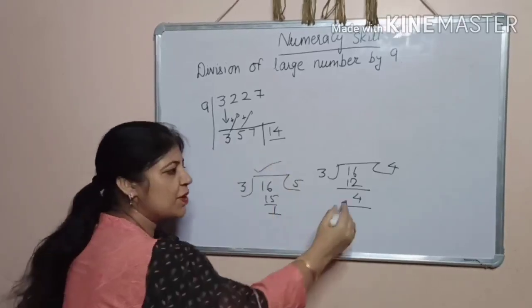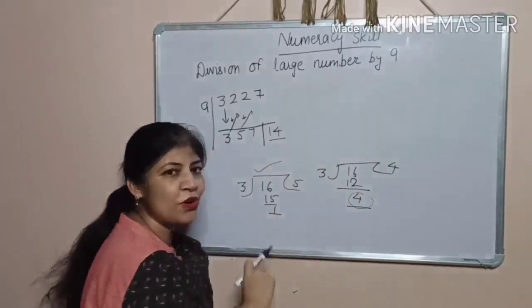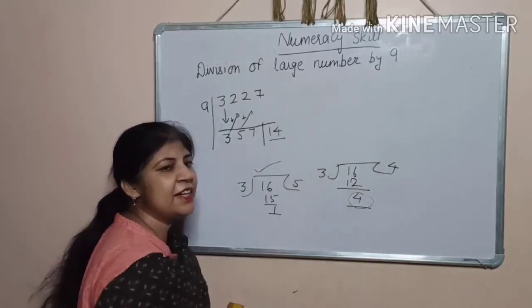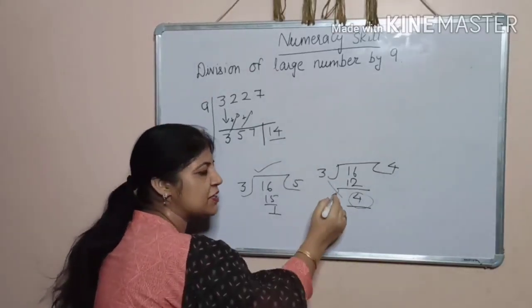Yes, this is correct. Because remainder is 1. And remainder is greater than the divisor. It is not possible.